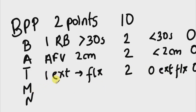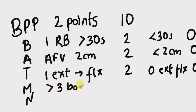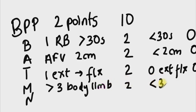For fetal movement, a score of two is assigned if there are greater than three discrete body or limb movements within 30 minutes. A score of zero is assigned if there are fewer than three discrete body movements within 30 minutes.